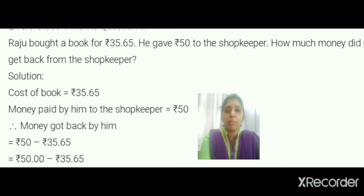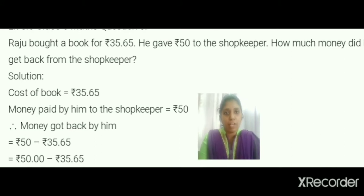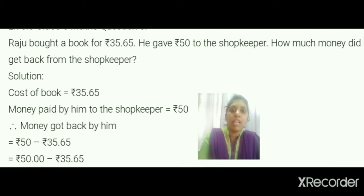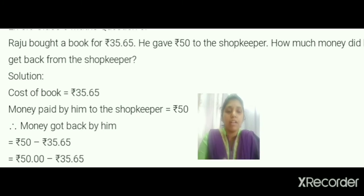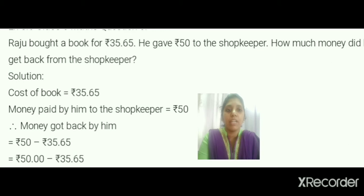Cost of the book is 35.65 and money paid by him to the shopkeeper is 50 rupees. Money got back by him — how much is he getting back? He has to subtract. So 50 minus 35.65.